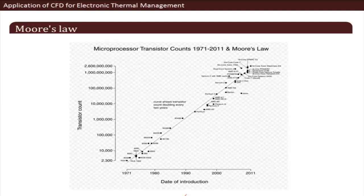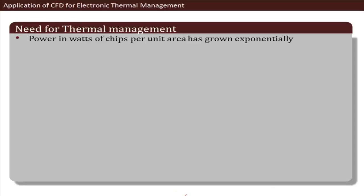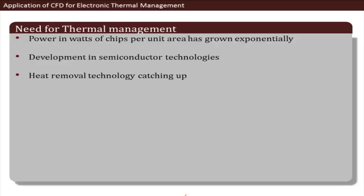The need for temperature control in electronic thermal systems stems from Moore's Law, which states that transistors on a chip double roughly every year, leading to exponentially increasing performance but also much more heat dissipation. The power in watts per unit area of a chip has grown exponentially since early semiconductor development, making thermal management a serious challenge.